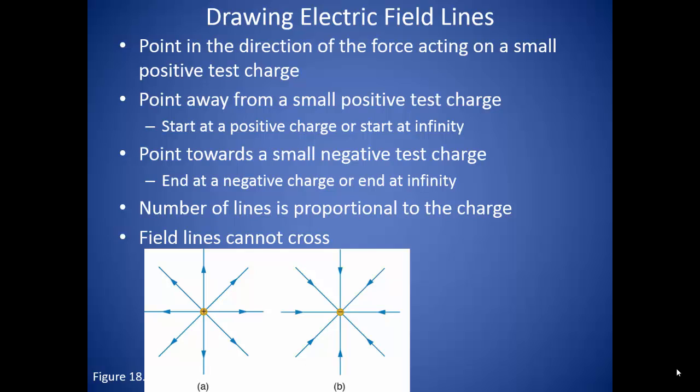In turn, if we look at that second diagram, we can see that the negative charge has the field lines moving all into that negative charge. So electric field lines will end at a negative charge. If there is no negative charge in sight, then they will end at infinity.